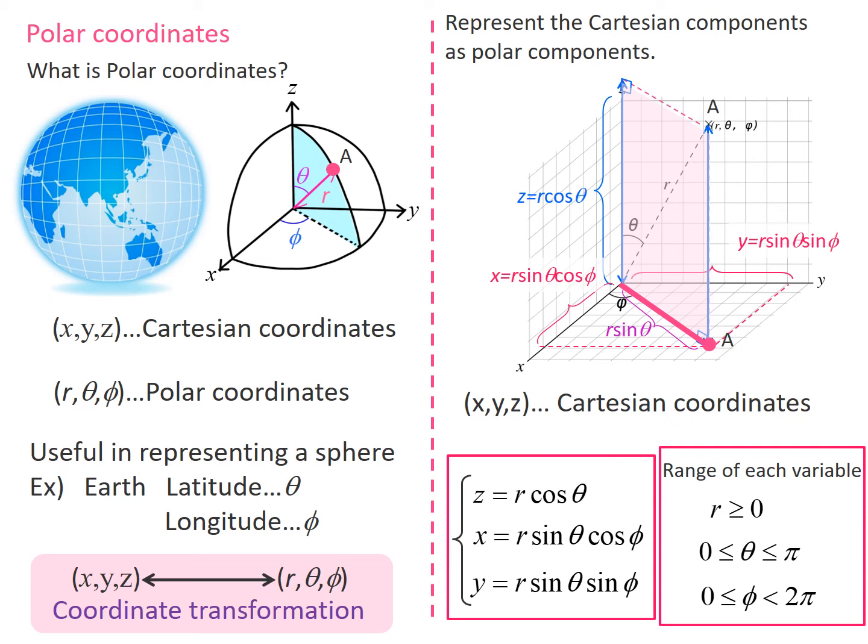Because r is the distance from the origin, it contains zero, goes to infinity, and is always positive.